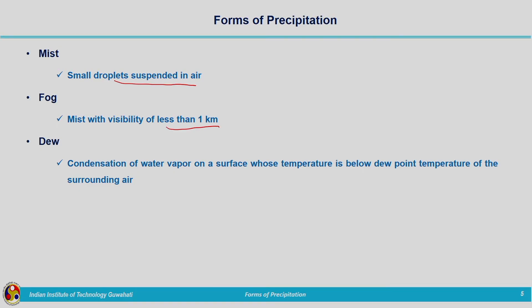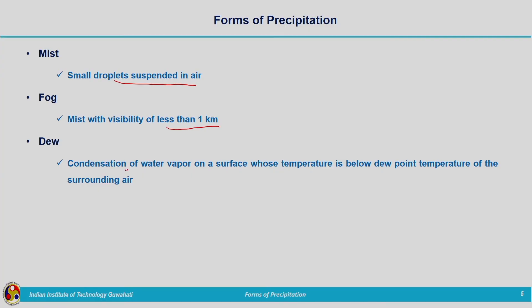Coming to dew — you might have experienced this on grass and leaves near the ground surface as small tiny droplets. Dew is the condensation of water vapor on a surface whose temperature is below the dew point temperature of the surrounding air. When the ground surface temperature is below the dew point temperature, water vapor is converted to liquid, forming small water droplets. This condensation phenomenon can be seen on leaves and grass.